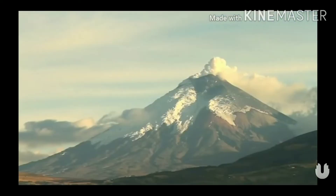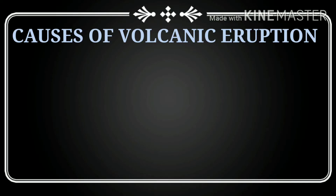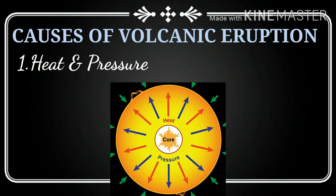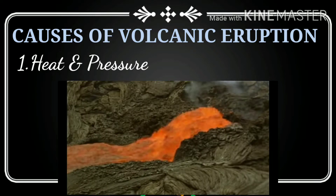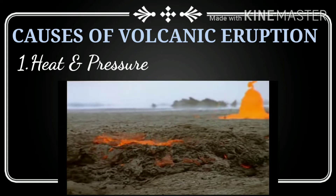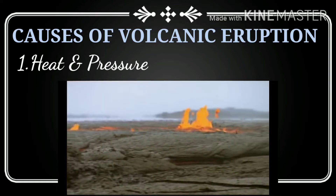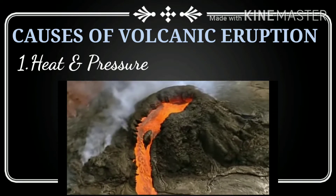Causes of volcanic eruptions: volcanic eruptions are sudden movements associated with internal forces of the earth. A volcano is a vent in the earth's crust from which fiery hot magma erupts from the earth's interior. The main causes are: heat and pressure inside the earth — temperature and pressure both increase from the surface towards the centre of the earth. Rocks are bad conductors of heat, so the earth's heat does not escape on its own. Instead it melts the rocks and builds up great pressure, which forces the heat to find an escape route through fissures and cracks in the rock.